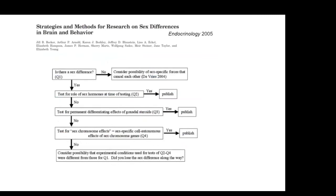About 14 years ago, a committee I was on published a lengthy paper in endocrinology on best practices for studying sex differences. There's a logic tree: the first question is, is there a sex difference? Then you ask what biological processes cause it. There are three major classes: transient activation effects of gonadal hormones, permanent organizational effects, and sex chromosome effects. The logic tree says first check for activation effects — take out the gonads and see whether the sex difference goes away. If not, check whether permanent gonadal hormone effects explain it by manipulating hormones prenatally or postnatally. And if that doesn't explain the sex difference, then look at sex chromosome effects.